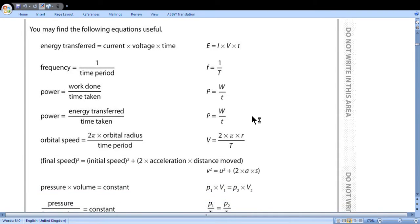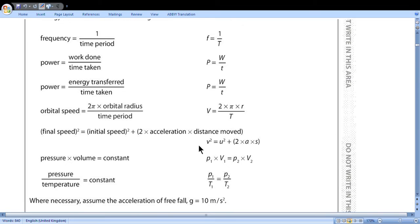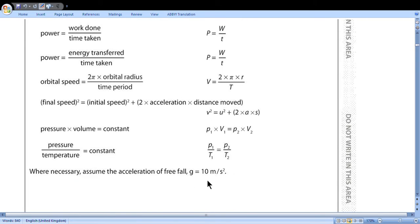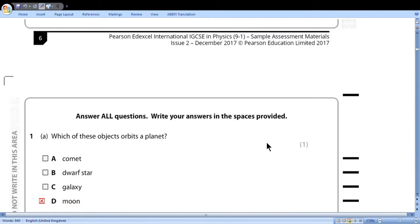We will need an equation for orbital speed, velocity, final velocity, initial velocity, acceleration and distance traveled, and two equations for gas laws. G will take 10 meters per second squared. Let's start.